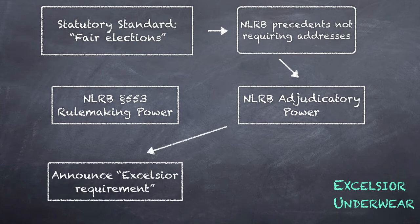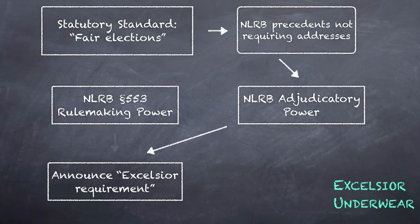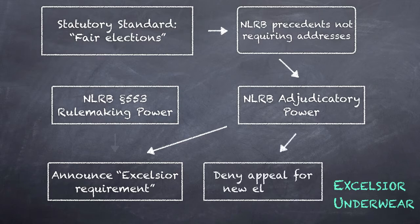This was not preliminary to noticing a proposed rulemaking in the Federal Register as required by APA Section 553. The board did not undertake notice-and-comment rulemaking. The board announced what we can call the Excelsior requirement in the opinion it issued in a case involving only this election disputed by one union and one employer. To avoid giving retroactive effect to the new requirement, the board did not apply it in the case before it and denied the union's challenge.